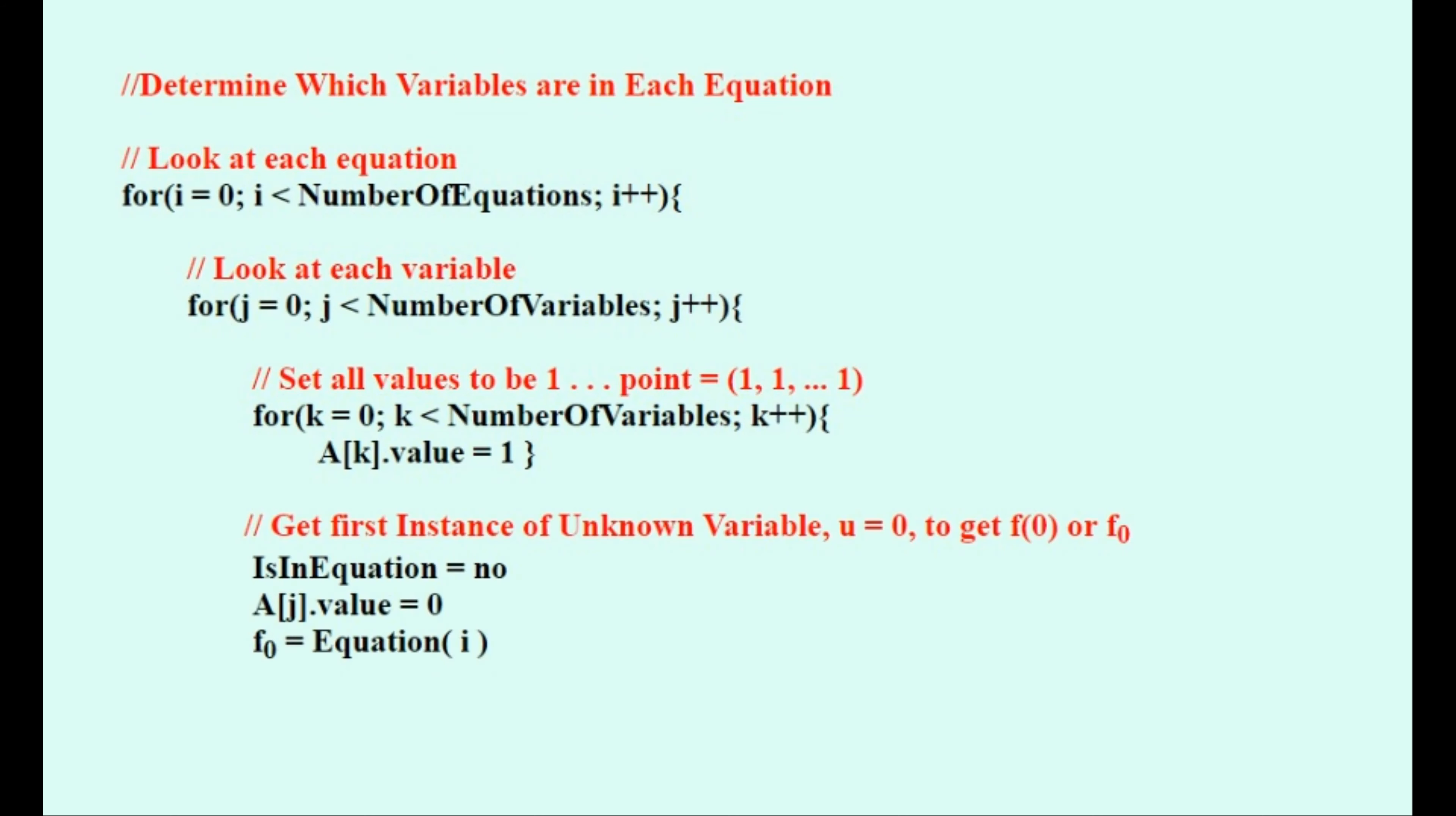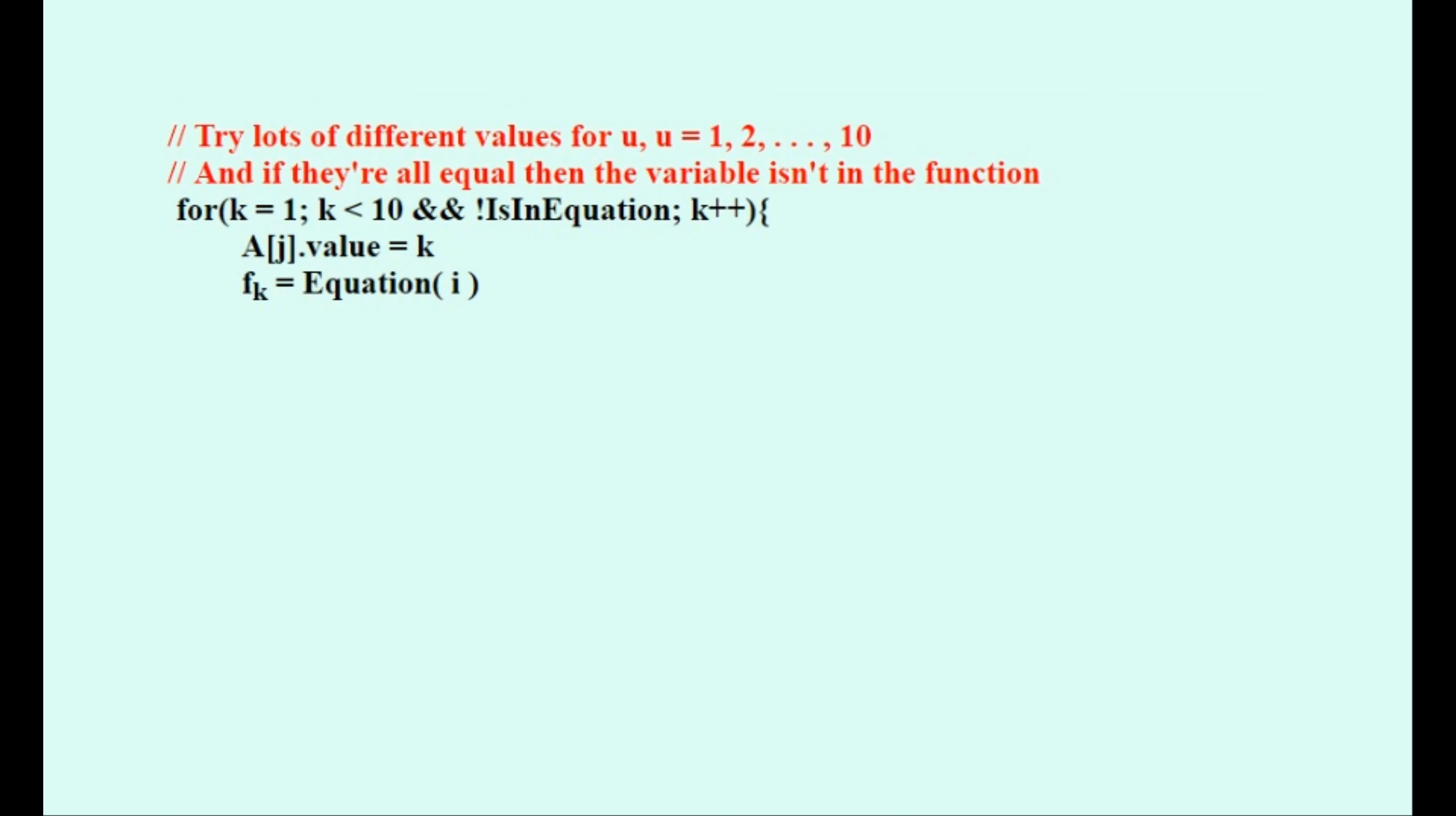Then we'll set the variable we're checking to equal zero and find F0 for this variable. Then we'll create a loop and check it for a large number of other values like U is equal to 1 and 2, etc., and find the value of F corresponding to this value of U, which is FK.